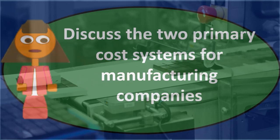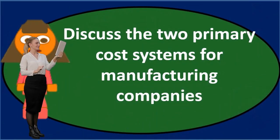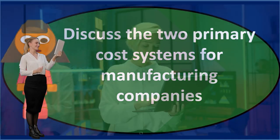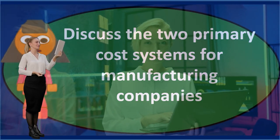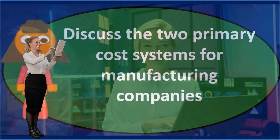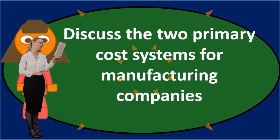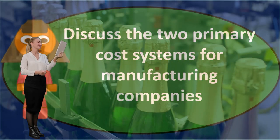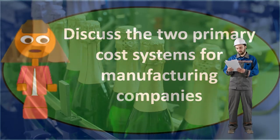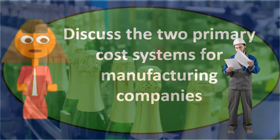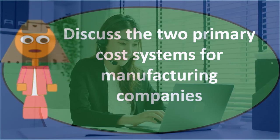So those are the two primary systems. It could be the case that we have types of inventory with both a processing component and a standardized component — some component that's all the same and some that is partially customized. But in essence, those are the two major types of manufacturing cost systems. We distinguish them by how unique or customized the inventory is, and that's the driving factor as to whether we want to use a job cost system or a process cost system.